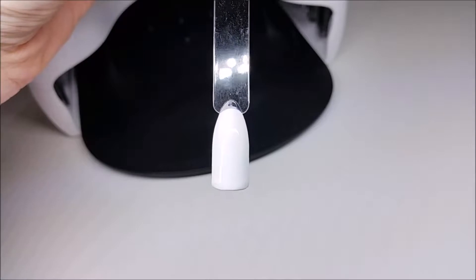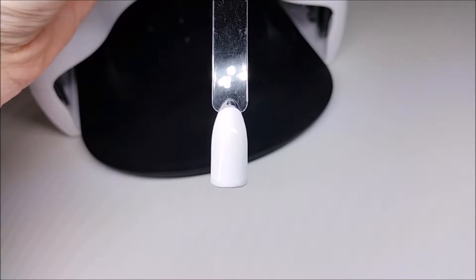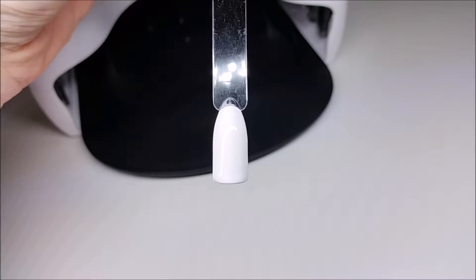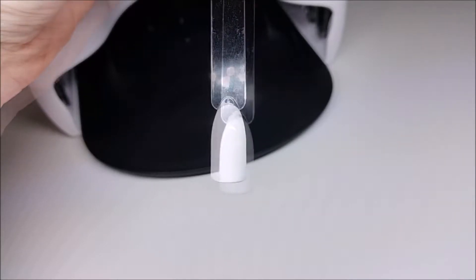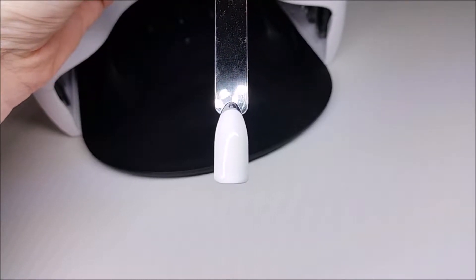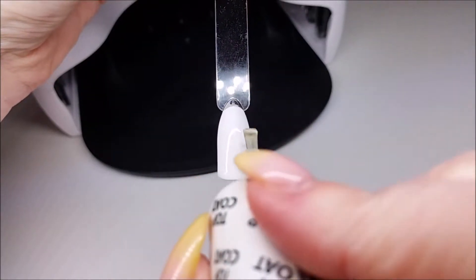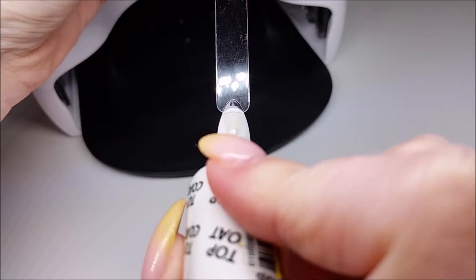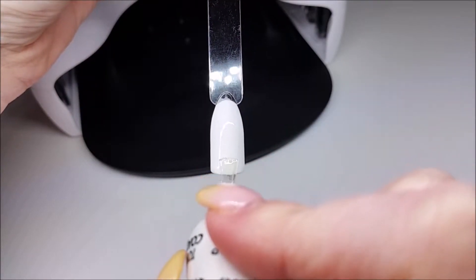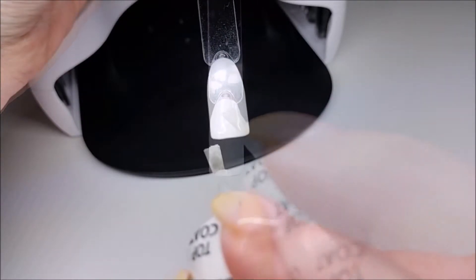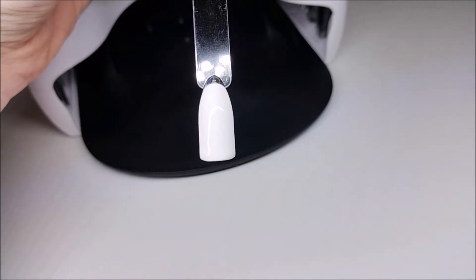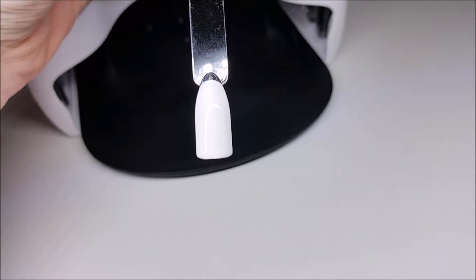So I've gone in with my base coat and cured, and my two coats are white and cured. I used OPI gel color in Alpine Snow. And the next step that we're going to do is to paint on our top coat. So we're just going to do a nice thin layer of top coat, and we're just going to cap the edge. And we want to leave that uncured at this stage.